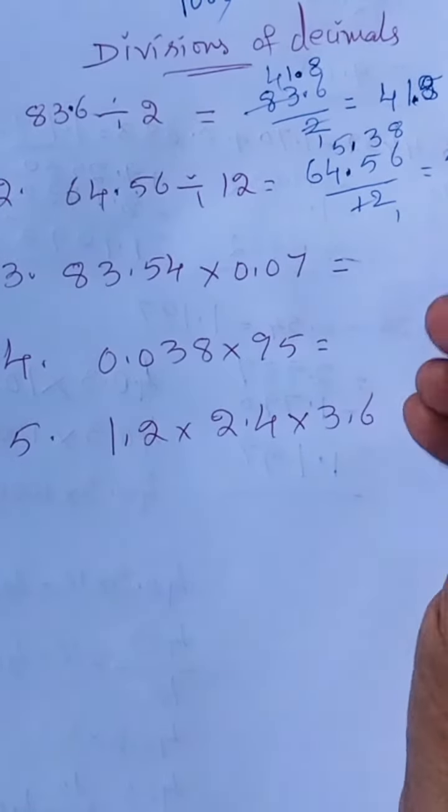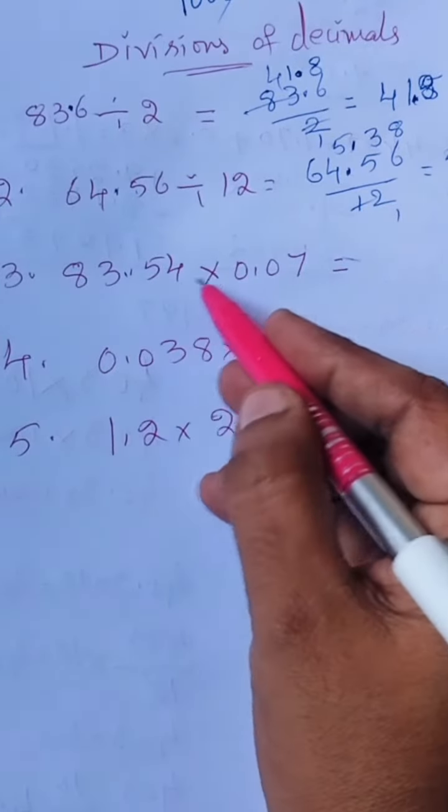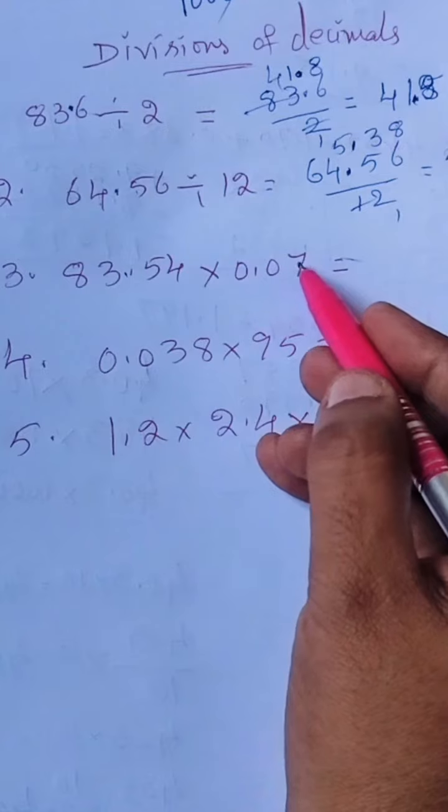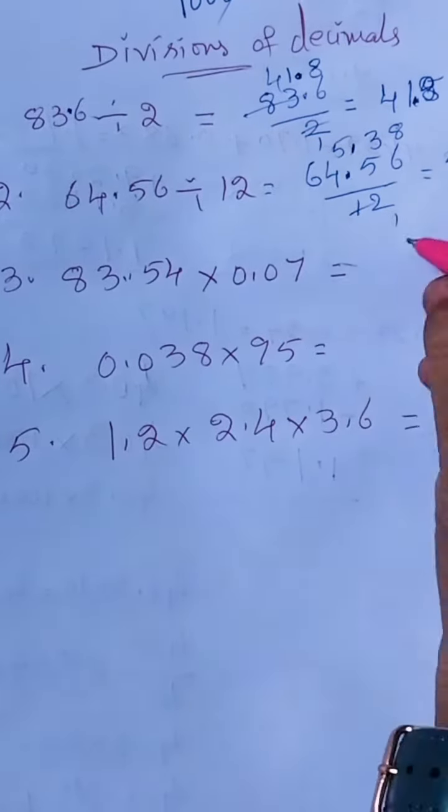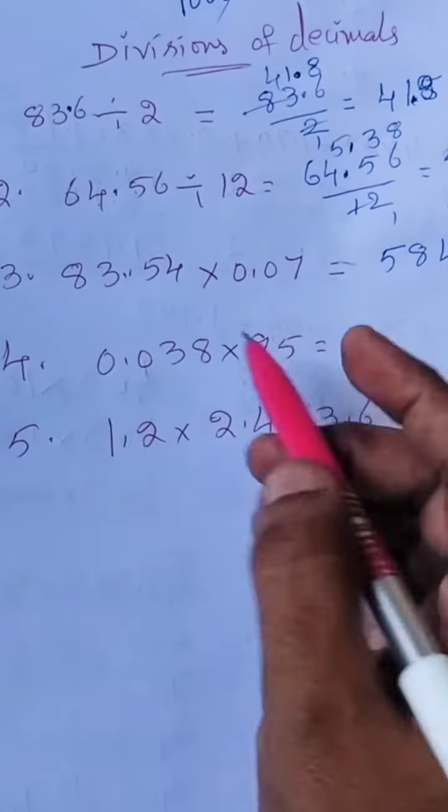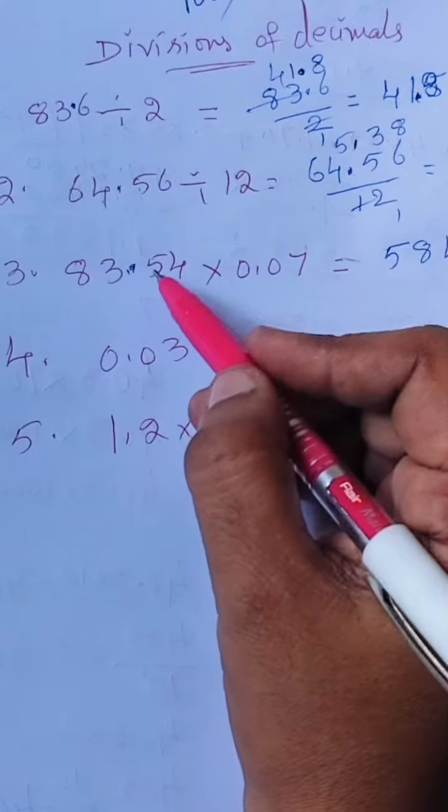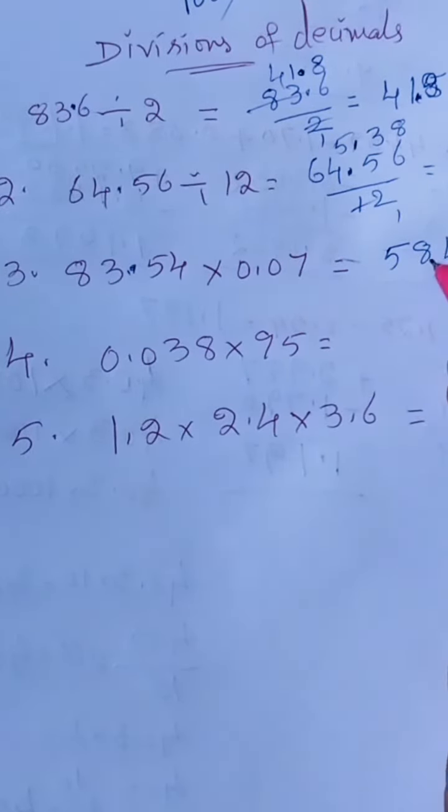Here, 83.54 into 0.07. Actually, the answer equals 58478. So here two numbers before the point, so 1, 2, 3, 4. So 4 digits before we keep the point: 1, 2, 3, 4. So this is the answer.